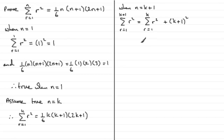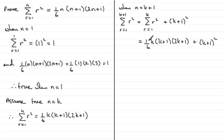Using our assumption, that sum equals one sixth k multiplied by k plus 1 multiplied by 2k plus 1, plus k plus 1 all squared. To prove this is true for n equals k plus 1, we'd expect to see one sixth times k plus 1. I can see that one sixth and k plus 1 is a common factor in both terms, so I'm going to pull out one sixth k plus 1.